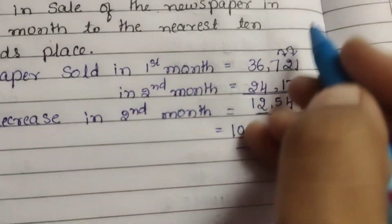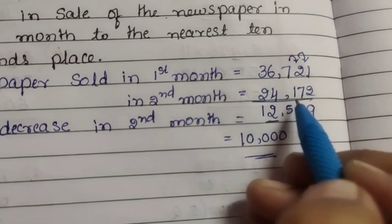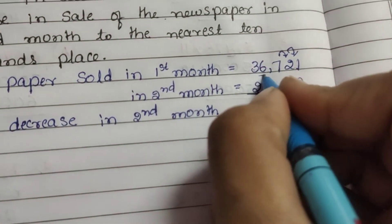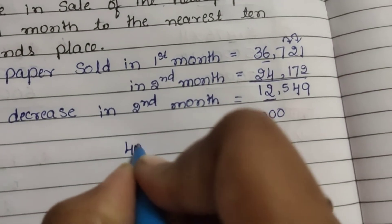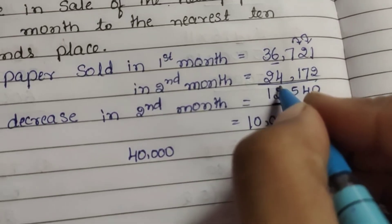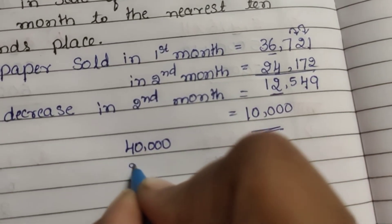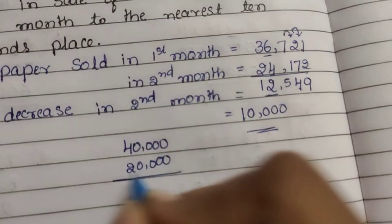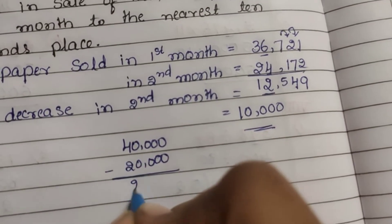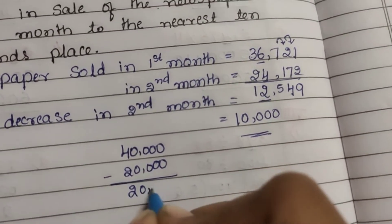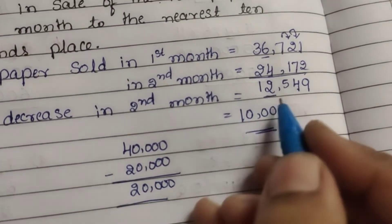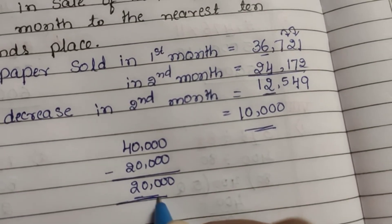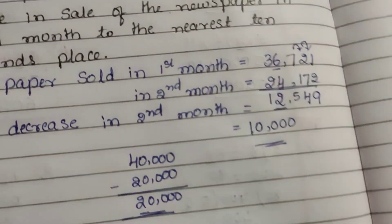But note: if we estimate first before finding the difference — 36,721 rounds to 40,000 and 24,172 rounds to 20,000. Then 4 minus 2 is 2, giving 20,000. The book answer is 20,000. Note this difference in approach.